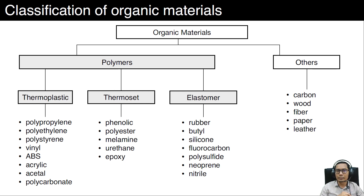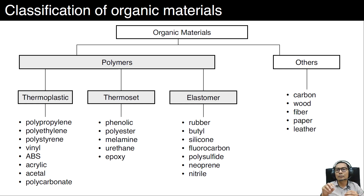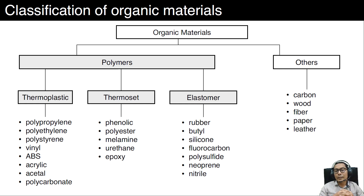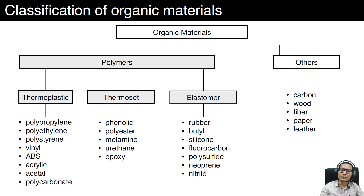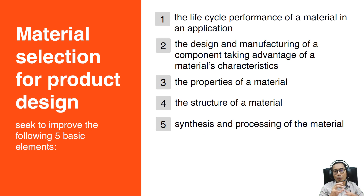The organic materials classification includes polymers, further divided into thermoplastics, thermosets, and elastomers. Examples of thermoplastics include polypropylene, polyethylene, polystyrene, vinyl, ABS, and acrylic. Thermoset examples include phenolic, polyester, melamine, urethane, and epoxy. Elastomer examples include rubber, butyl, silicone, fluorocarbon, polysulfide, neoprene, and nitrile. Another group of organic materials is classified as natural materials, with examples such as carbon, wood, fiber, paper, and leather.